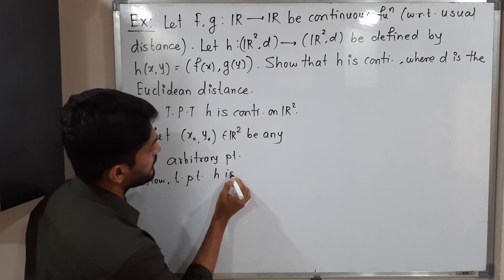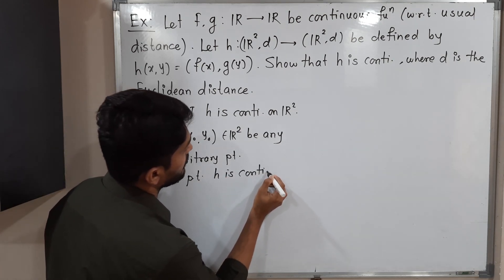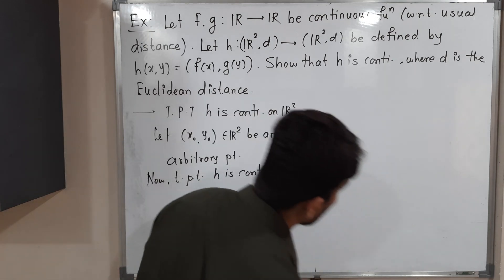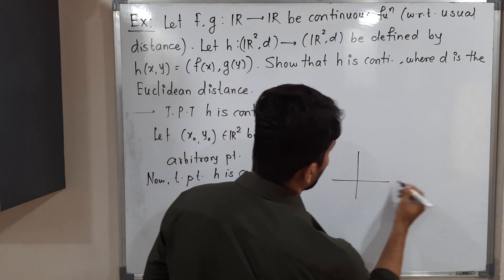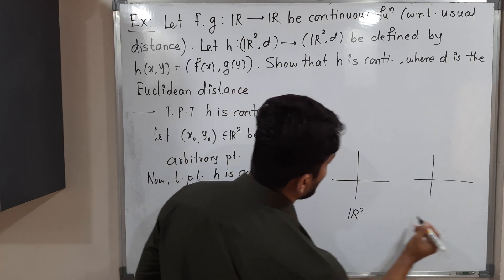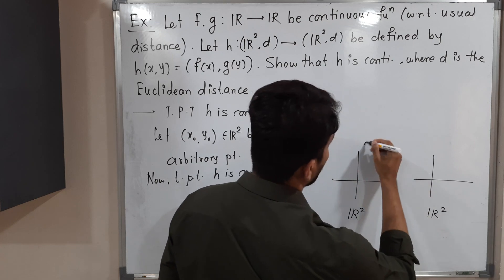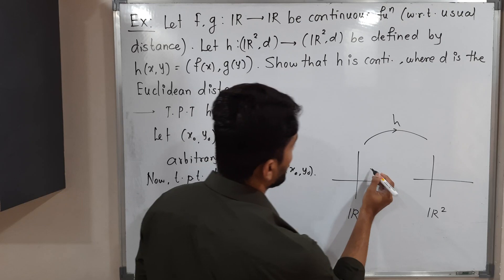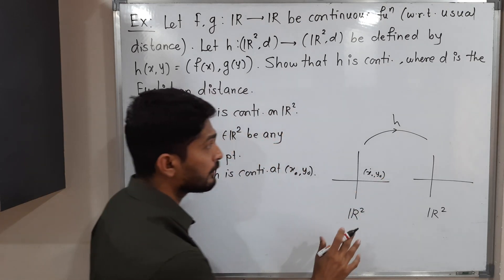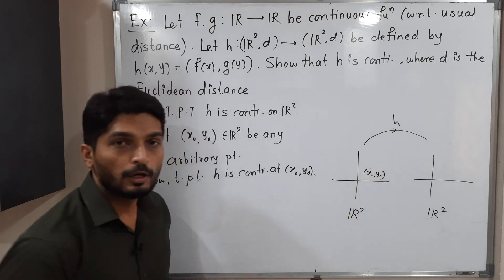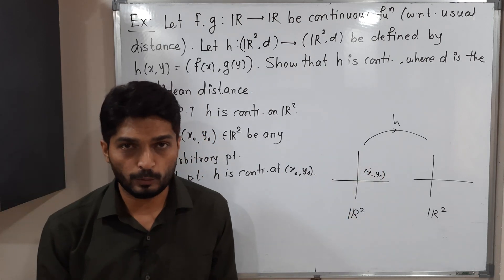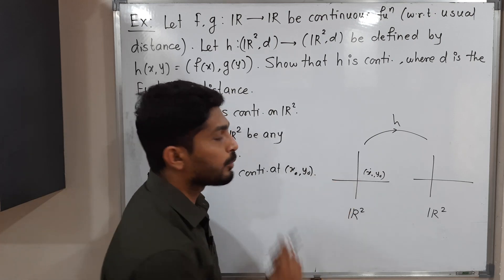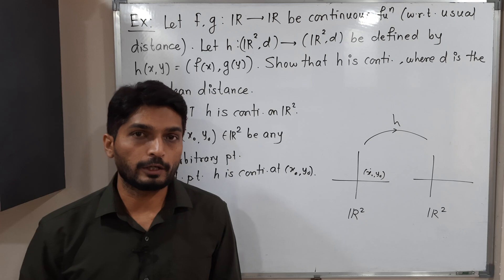Let me show this in a diagram. We have two planes here — the domain ℝ² and the codomain ℝ². We have a function H from ℝ² to ℝ². We have chosen one arbitrary point (x₀, y₀), and we have to prove that H is continuous at this point. There are several definitions of continuous functions available.